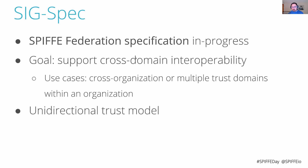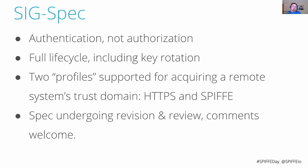The SPIFFE Federation spec aims to have flexibility in the set of use cases it targets. One important element is a unidirectional trust model, which is familiar from web PKI. When I use my browser to access the New York Times, my browser authenticates the New York Times, but the reverse is not true — the server does not need to authenticate my browser to serve its home page. We don't expect all federation relationships to be bidirectional.